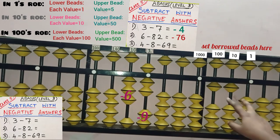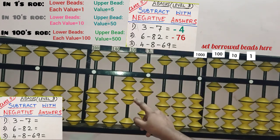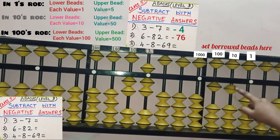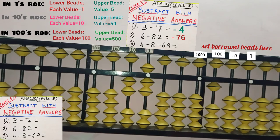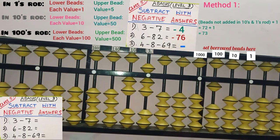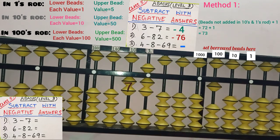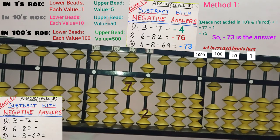Sum is over, but still borrowed beads are there to return. In 10's place, 1 borrowed bead is there. Beads are available to return, so remove 1 bead downward — 10 beads are returned. Clear the 10 beads. In 10's rod, no borrowed beads remain. In 100's rod, 1 borrowed bead is there but no beads are available to return. Hence, negative answer will come. In our question, 2 digits is the maximum — which is minus 69. Take these 2 rods: in 10's place, 50, 60, 70 — 70 beads are not added. In 1's place, 2 beads are not added — 1, 2 — so 72. Finally, add with 1: 72 plus 1 equals 73. Minus 73 is our answer — that is first method.